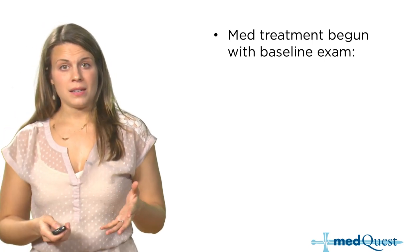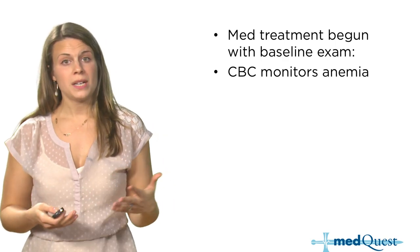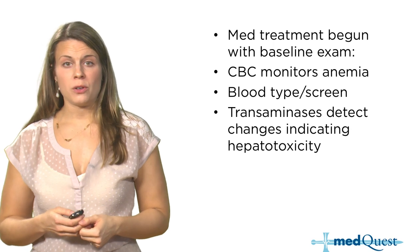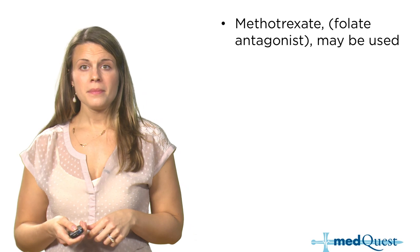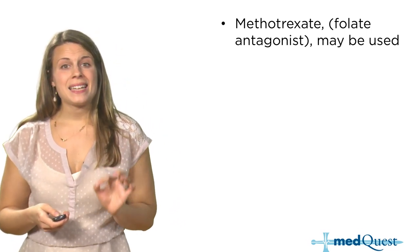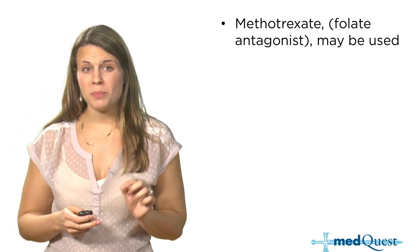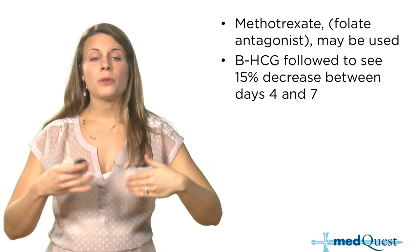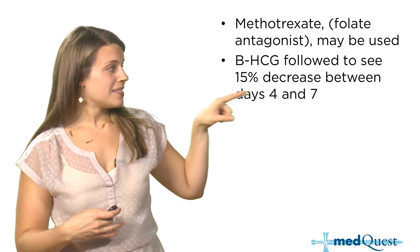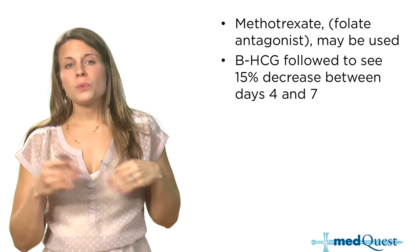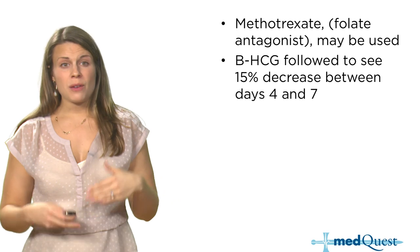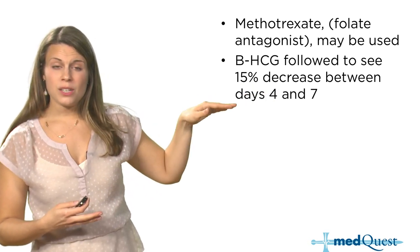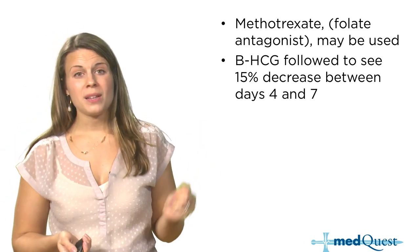Medical treatment is typically begun with a baseline exam. Check a CBC for anemia, do a blood type and screen, and get transaminases because hepatotoxicity precludes treatment with methotrexate. Methotrexate is a folate antagonist, so make sure patients stop taking prenatal vitamins. When you give methotrexate, you follow the patient's beta-HCG levels, looking for a 15% decrease between days four and seven. As long as you see this decrease, the methotrexate is working and you can follow them weekly thereafter.